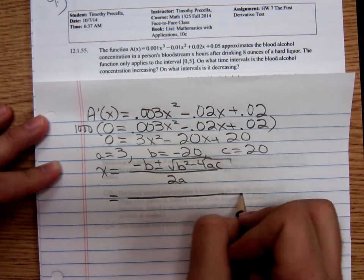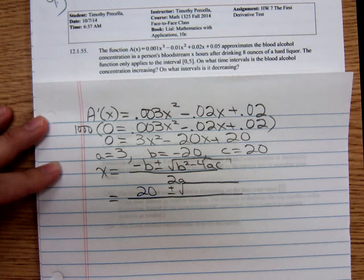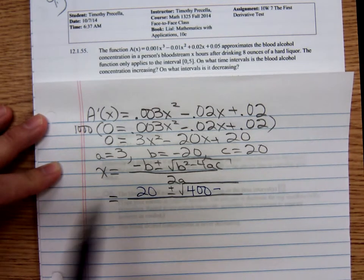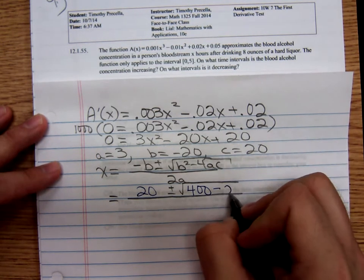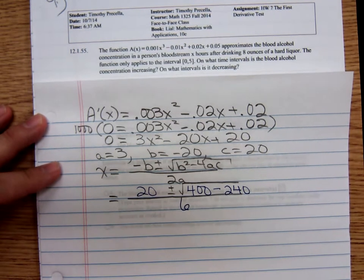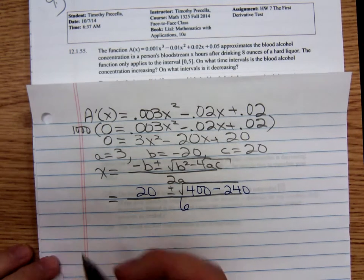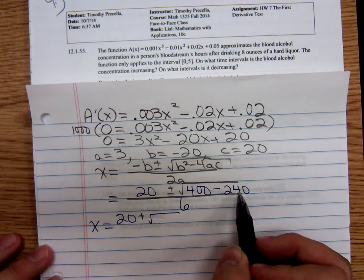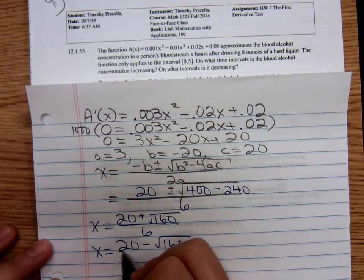So we have the opposite of b. The opposite of negative 20 is a positive 20 plus or minus negative 20 squared. I can do that in my head, that's 400 minus 4, four times a times c, that's 12 times 20, that's 240, all over in the denominator we have a 6. Maybe a good idea to split all this up right now. So we have two possible cases: 20 plus the square root of 400 minus 240 is 160, all over 6, and 20 minus the square root of 160 all over 6.